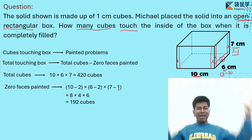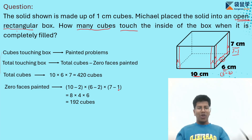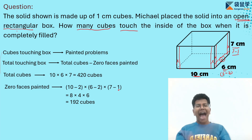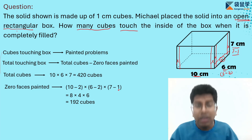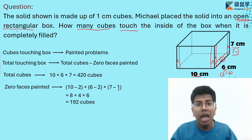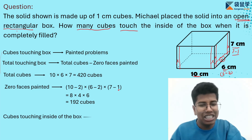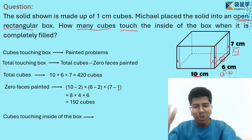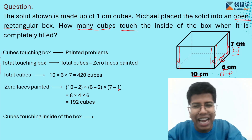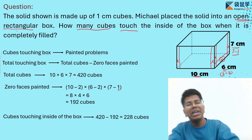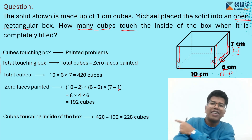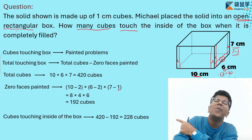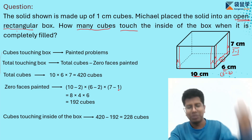The total number of cubes is 420 and the 0 faces painted count is 192. So cubes touching the inside of the box is 420 minus 192, which gives the final answer of 228 cubes.